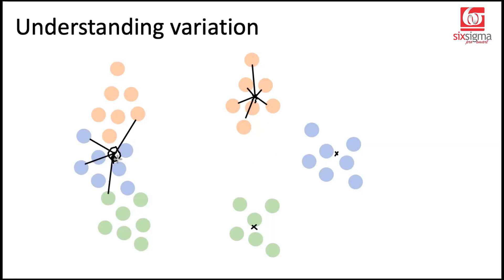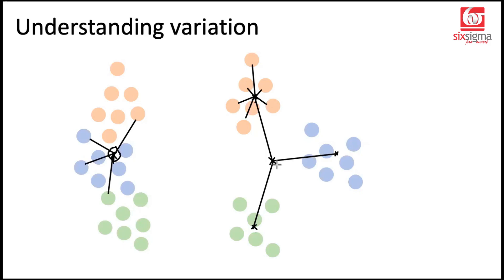Now imagine you already know the overall average, and every single group has an average as well. We try to understand how far the group averages are from this overall average. We're going to represent every single point in a group with its own group average, considering the number of points in each group. Broadly speaking, sum of squares between is a measure of how the group averages relate to the overall average. This is just a visual way of looking at it.